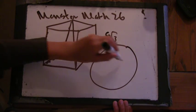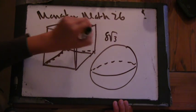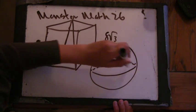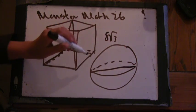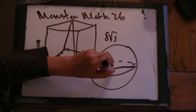So now, just to make it clear, I'm gonna draw the sphere outside. The diameter is 8 root 3, and the radius is 4 root 3.